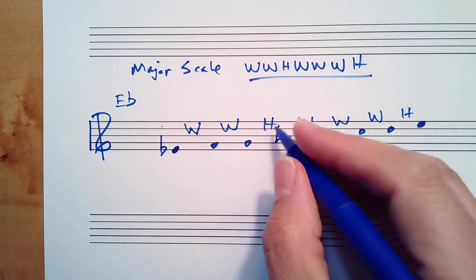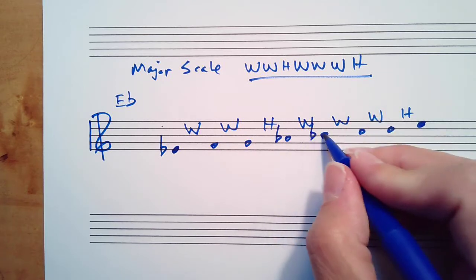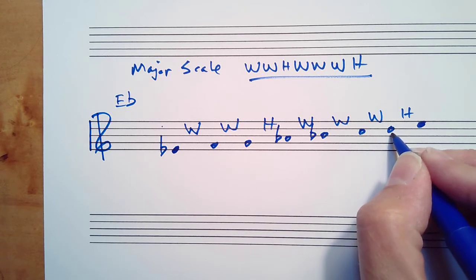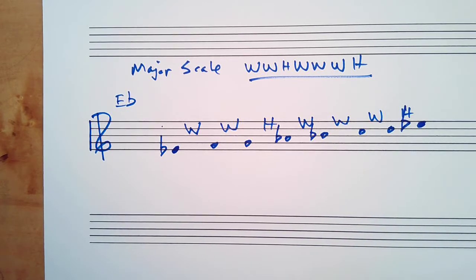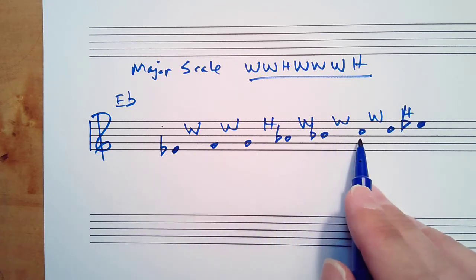Whole step up from there is B flat. Whole step is C, D, and a half step is E flat. So the scale is E flat F G A flat B flat C D E flat.